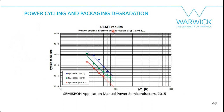The LESIT results show curves for mean temperatures of 60°C, 80°C, and 100°C evaluated at different ΔT values. Increasing mean temperature reduces the number of cycles to failure; increasing ΔT also reduces cycles to failure. Manufacturers provide these power cycling results for different ΔT values so you can apply them to your converter designs.